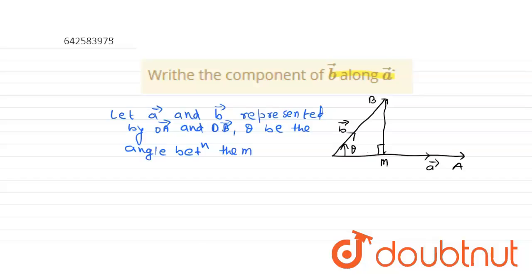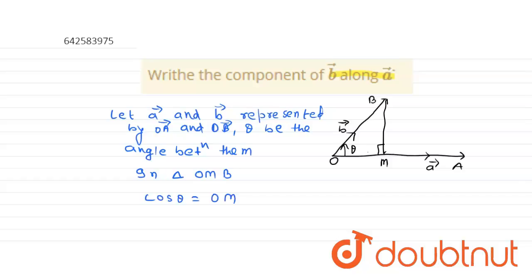In triangle OMB, cos theta is equal to OM upon OB. Therefore, OM must be equal to OB into cos theta.